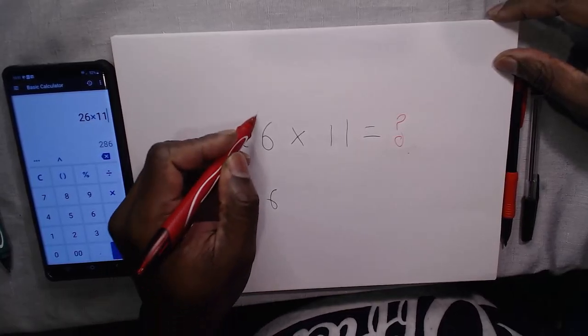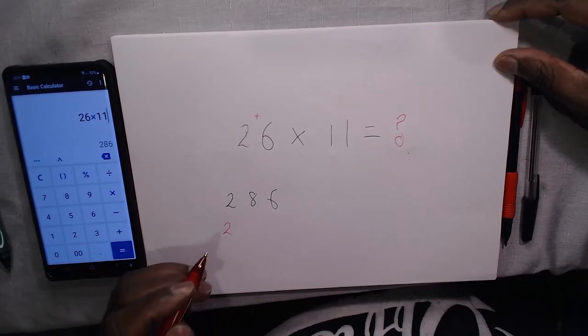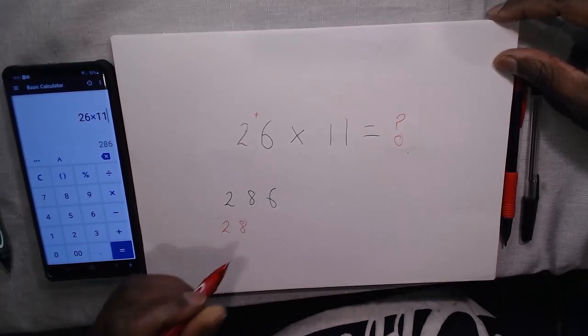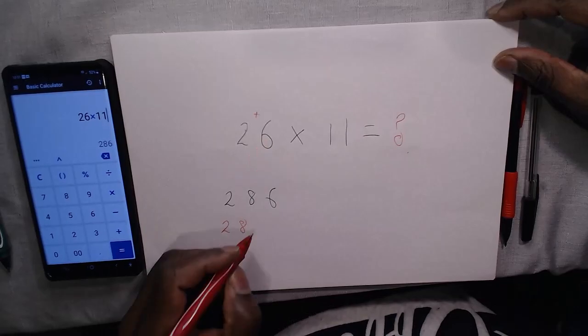Add the first digit to the second digit, so that's 2 plus 6 equals 8. Place that down. And then simply record the last digit, 286.